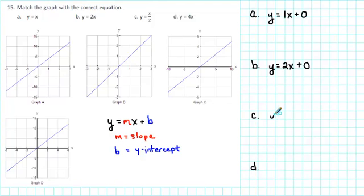For C, we have y = x/2, but dividing by 2 is the same as multiplying by 1/2. So we could rewrite this as y = (1/2)x + 0.